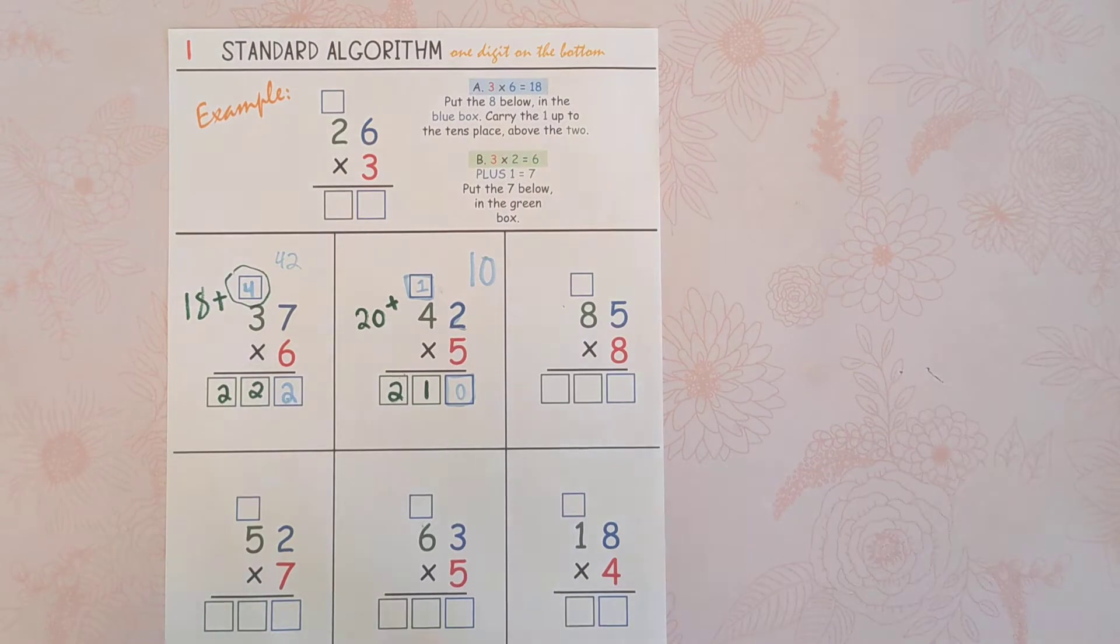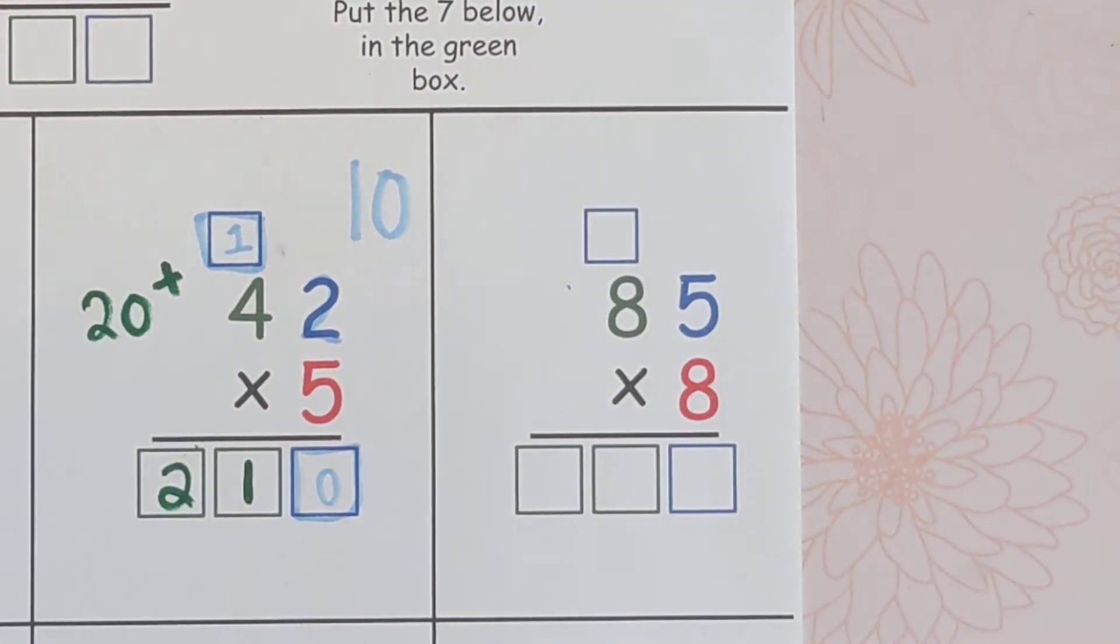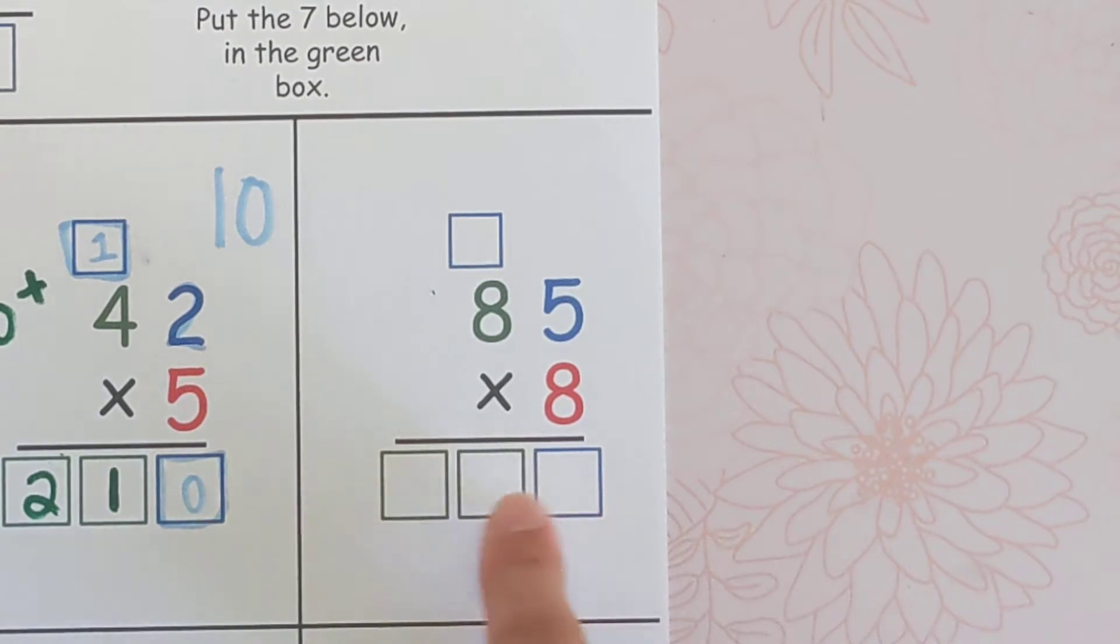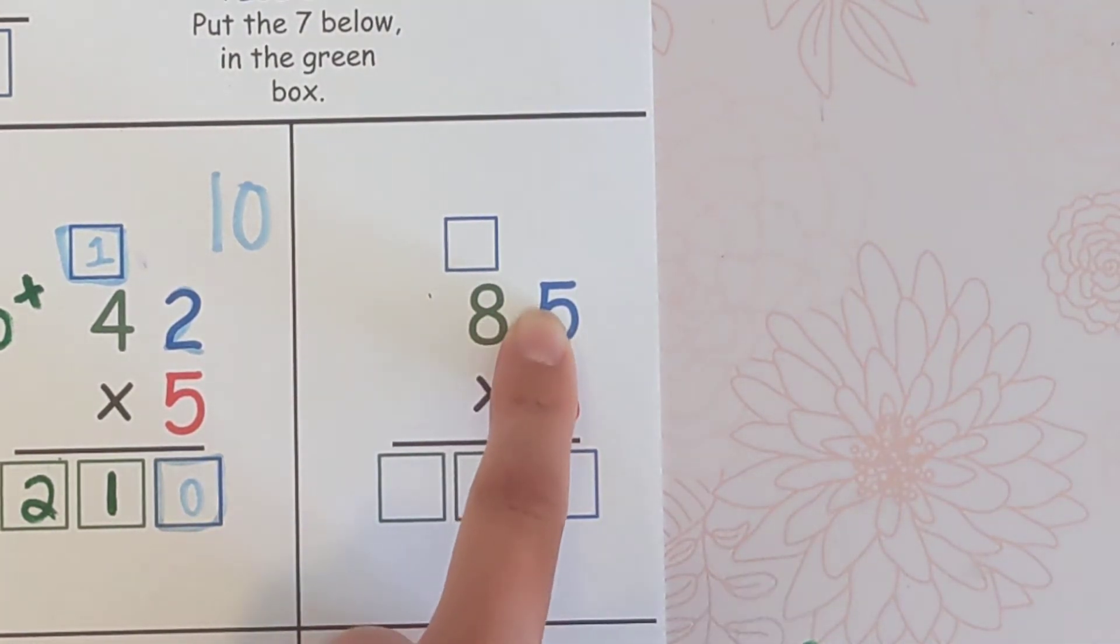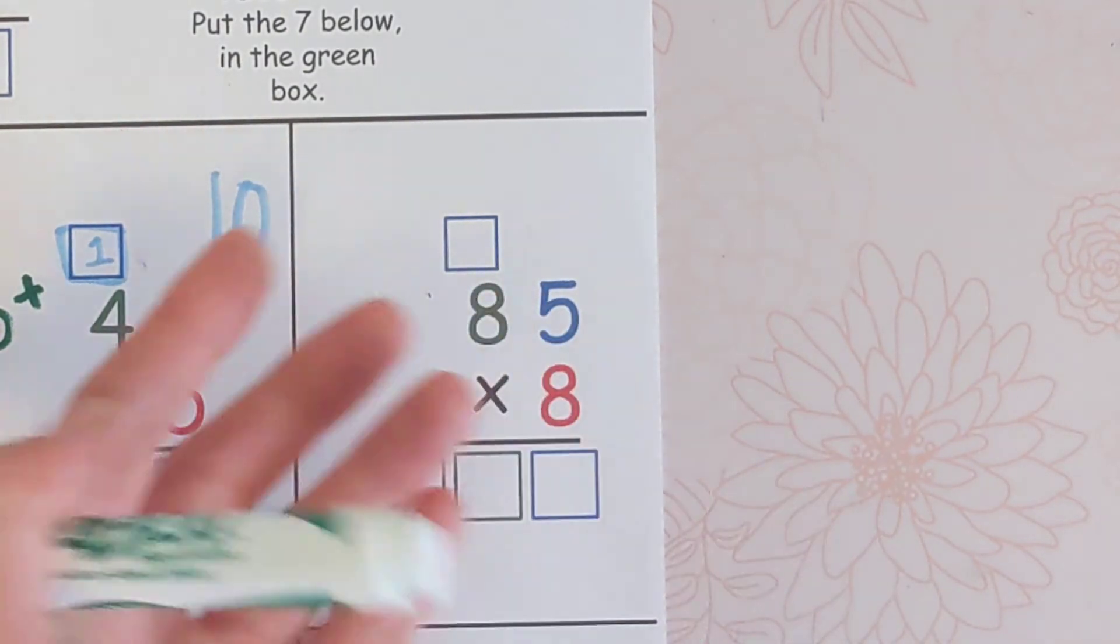So we're going to do 85 times 5. There are color-coded boxes here that'll just help guide you as you learn, so that you can check and make sure that you've put the correct amount of digits in. With the standard algorithm, we want to remember that this number up here on top is a full, whole number, it's 85, and so the 8 and the 5 are not going to battle each other. They're on the same team. Two digits, one number, 85.